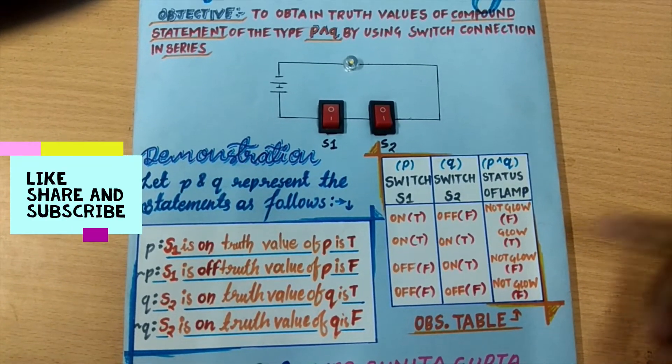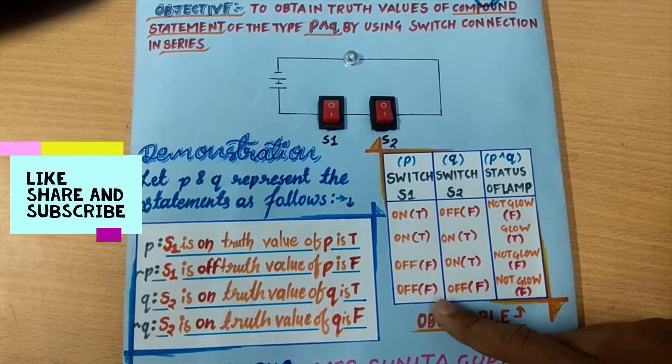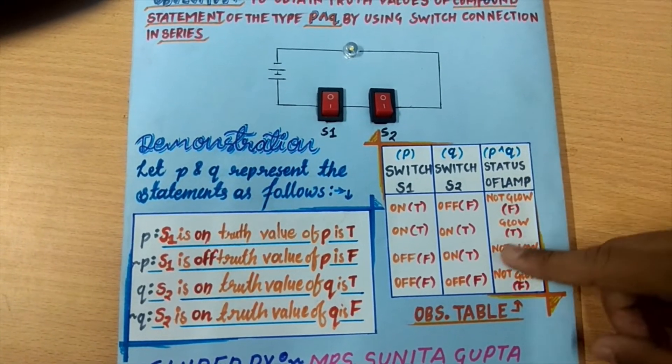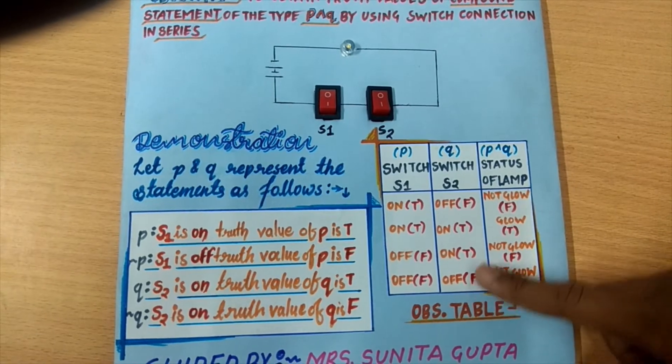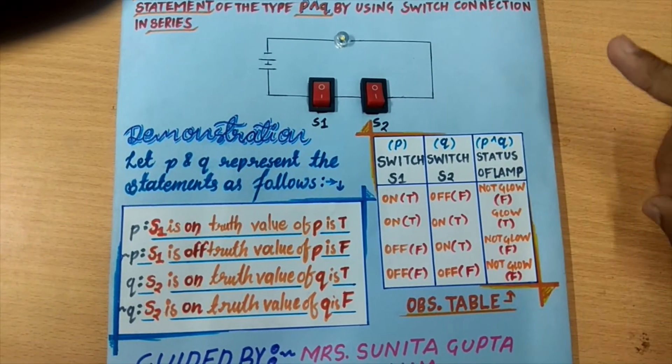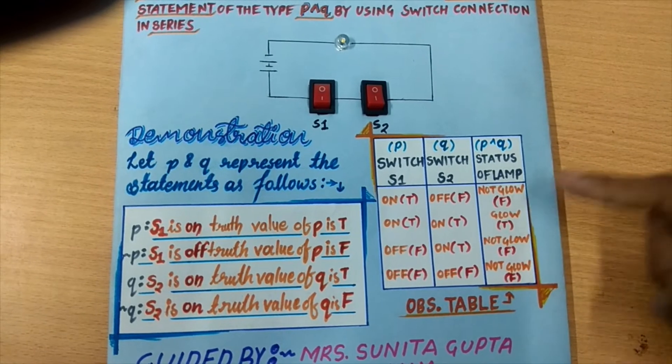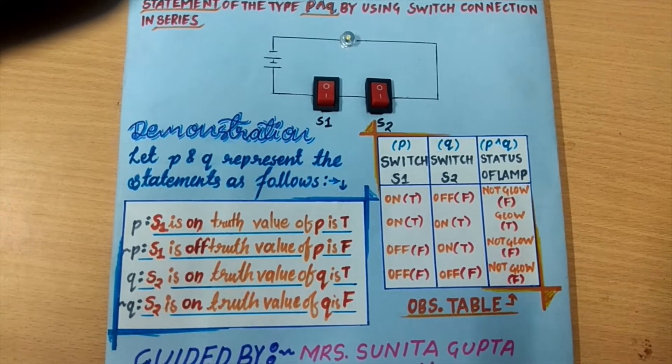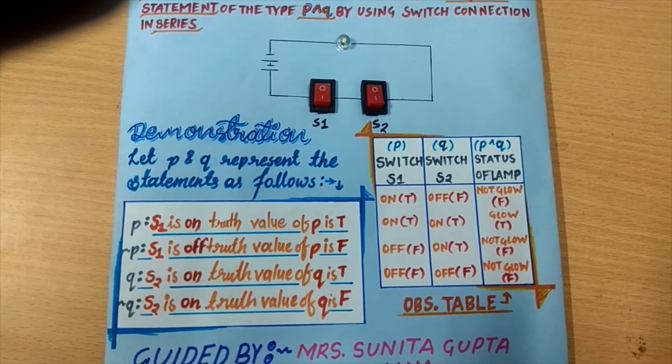Next case, the truth value of P is false, so S1 remains off and truth value of Q is also false, then S2 remains also off. So we see that bulb doesn't glow. It means that the truth value of compound statement P and Q is false.